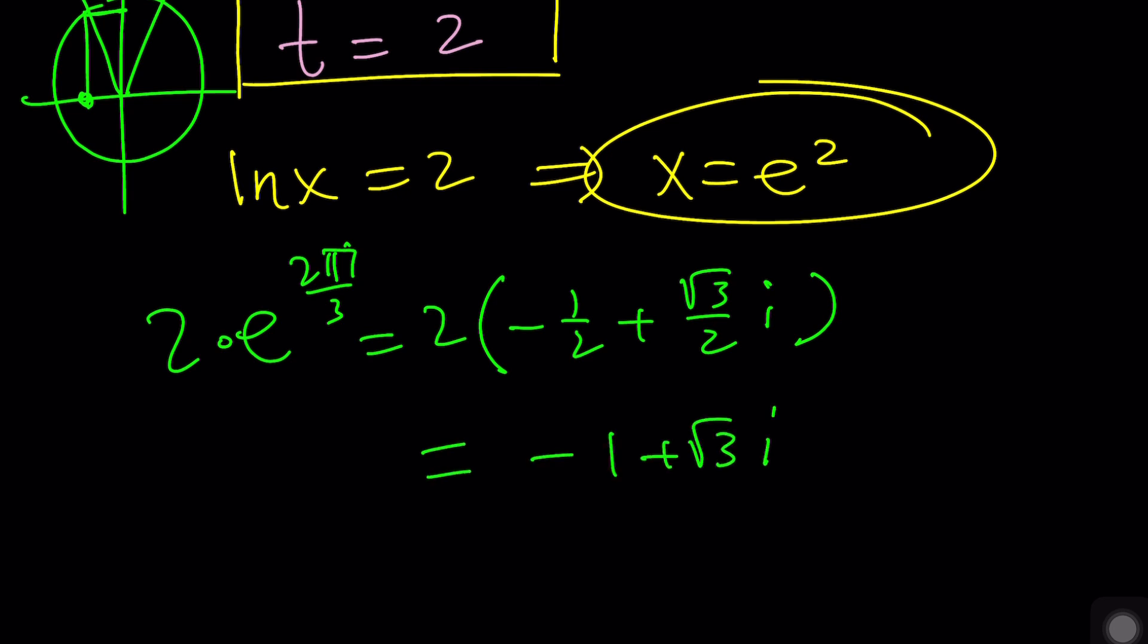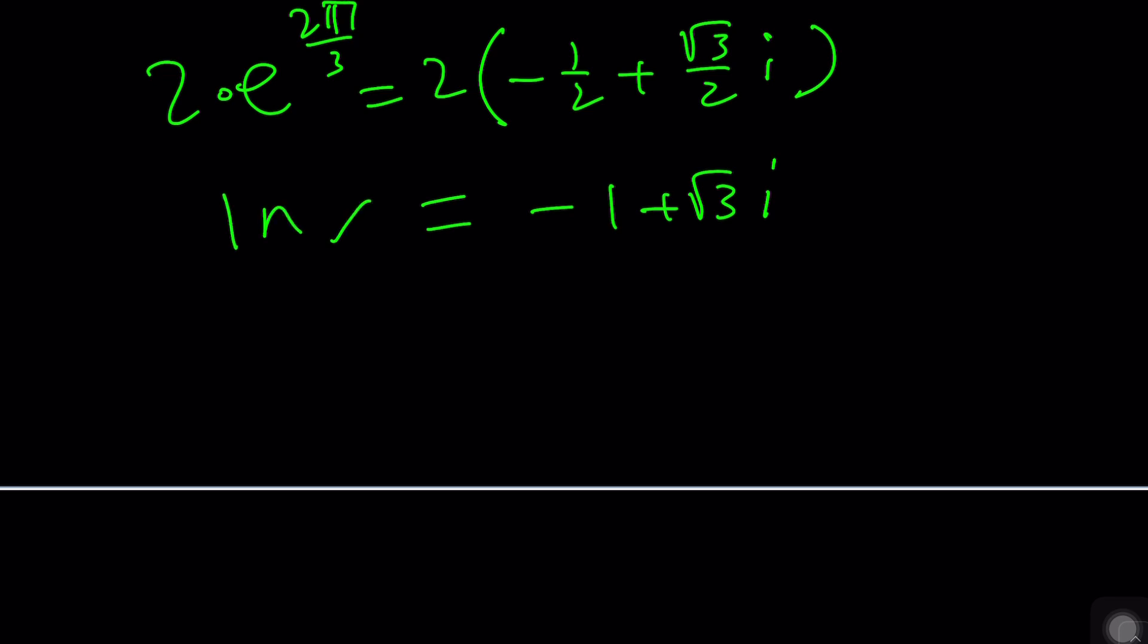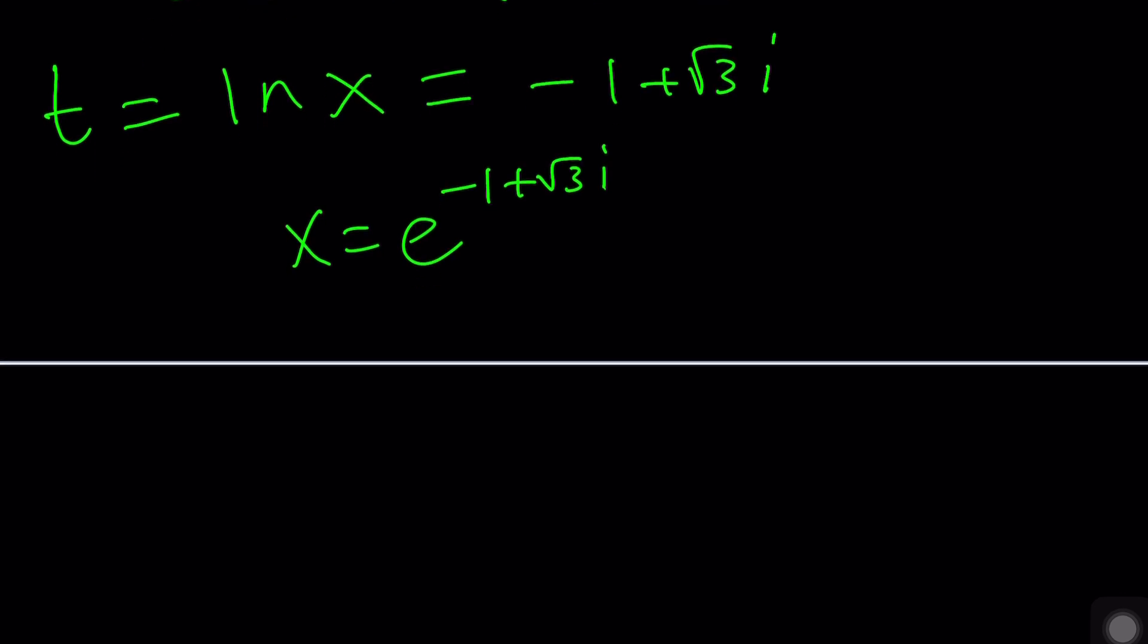And when you distribute the 2, you're going to get negative 1 plus root 3i. Now, this is the, what? t value. And t is ln(x). So, we're going to set this equal to ln(x), because this is t. And now, we have ln(x) equals this. So, x is going to be e to the power negative 1 plus root 3i. And the other one is just going to be coming from 4π over 3. Make sense? Okay, cool. Really quick, I want to talk about the complex solutions. Now, let's go ahead and talk about the second method.